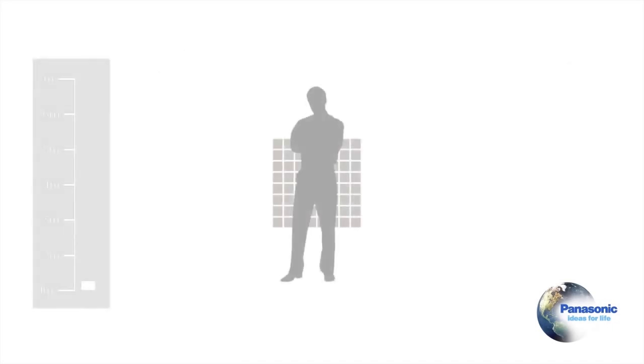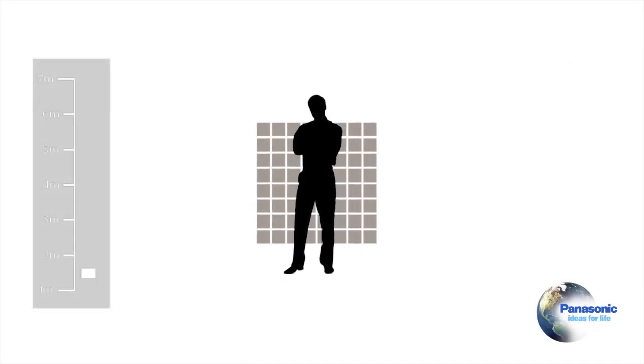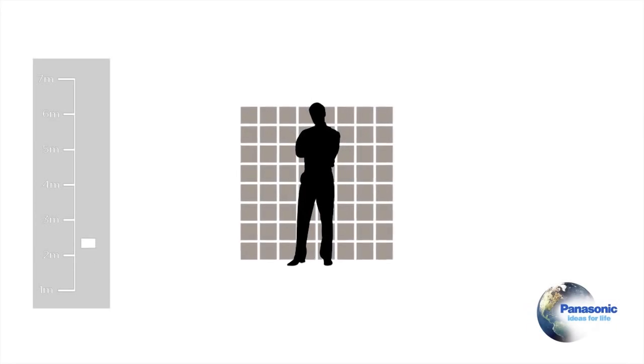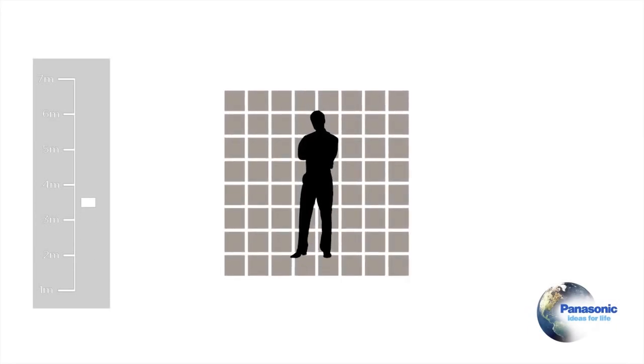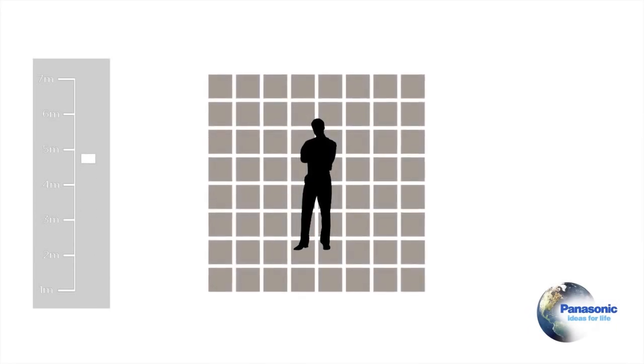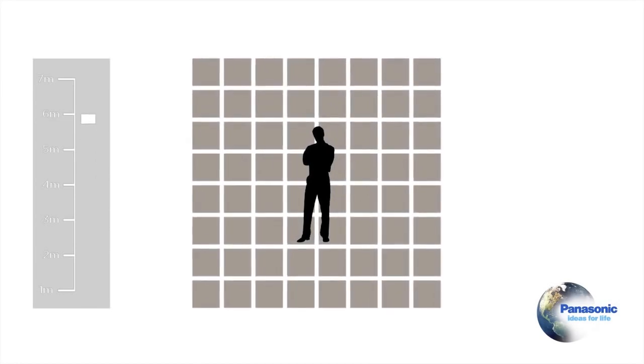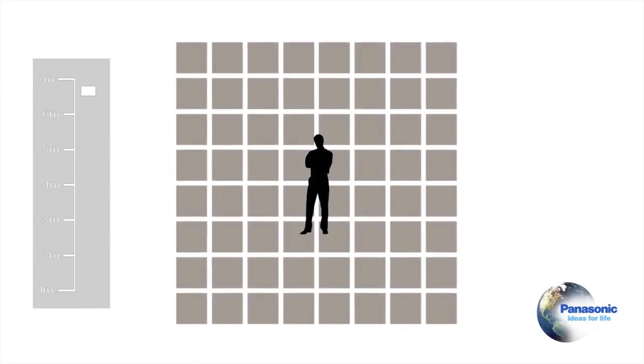However, when a human subject increases in distance from the sensor, its angular size appears smaller to the sensor all while the field of view is expanding. It's because of this inverse relationship that a human subject appears much smaller in the sensor's detection zone at longer distances.